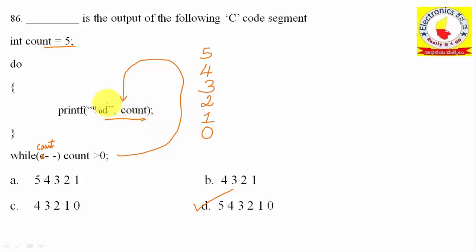If using format specifiers with %d and \t (tab), the values are printed with tab spacing, and %d with \n gives a new line. With post-decrement, first use the value then decrement it. With pre-decrement, first decrement the value then use it.